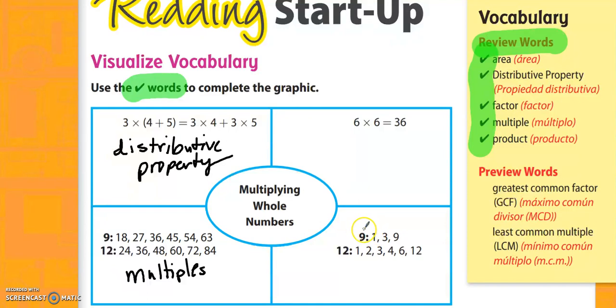Let's check out the lower right. 9, 1, 3, and 9. Those are all numbers that go into 9. 12, 1, 2, 3, 4, 6, 12. Those are all numbers that go into 12. Those are called factors. Factors are the numbers that divide evenly into a number.